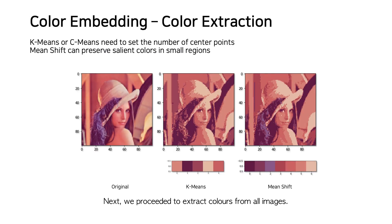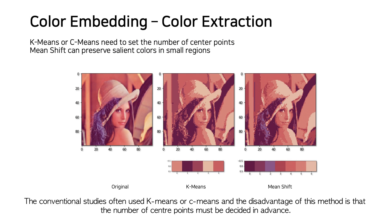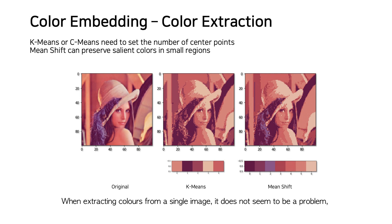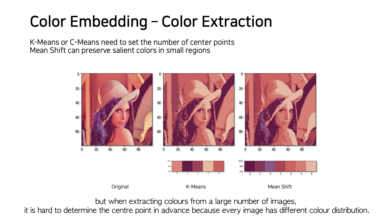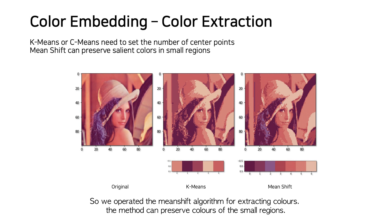Next, we proceeded to extract colors from all images. Conventional studies often use K-means or C-means, but the disadvantage is that the number of center points must be decided in advance. When extracting colors from a single image this is manageable, but when extracting colors from a large number of images, it is hard to determine the center point in advance because every image has a different color distribution. So we applied the mean-shift algorithm for extracting colors, which can preserve colors of small regions.